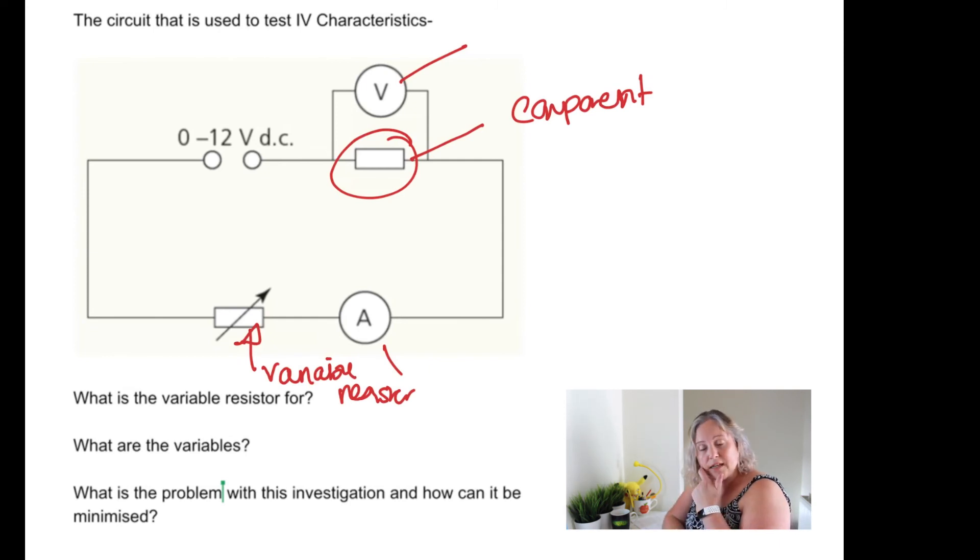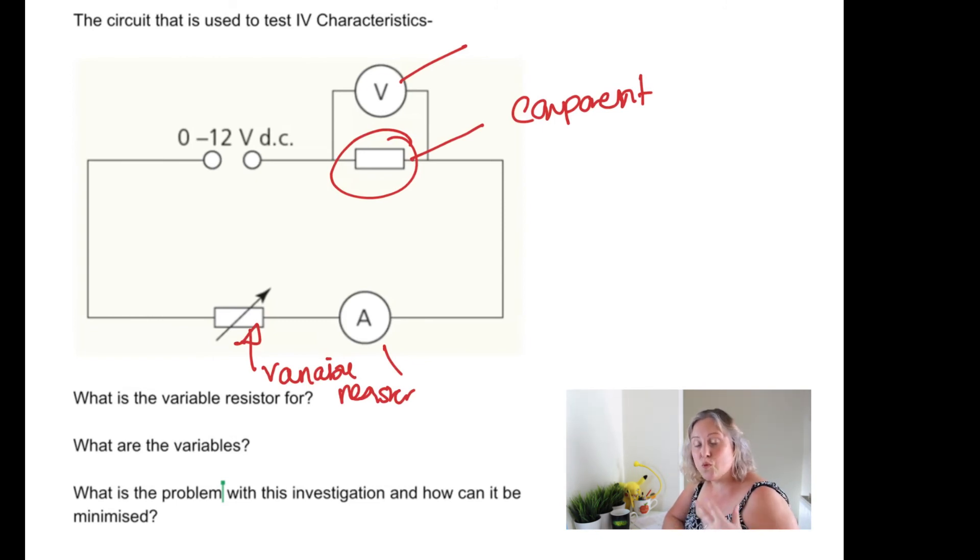A problem with this investigation is that if you leave a circuit on for a long time the temperature changes, causing resistance to increase, so you won't get that perfectly straight directly proportional line. As the wire gets hotter, the atoms inside start to move, making it harder for electrons to flow through. To prevent the component from getting hot while testing it, keep turning the circuit off when you're not recording results, to let it cool down so you don't affect your readings.